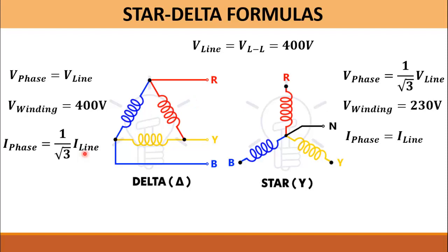In the star configuration, the voltage across each winding of the motor is equal to V line over √3. So if V line is 400 volts, then in star configuration the voltage across each winding is 230 volts, whereas the phase current and the line currents are both the same in star configuration.